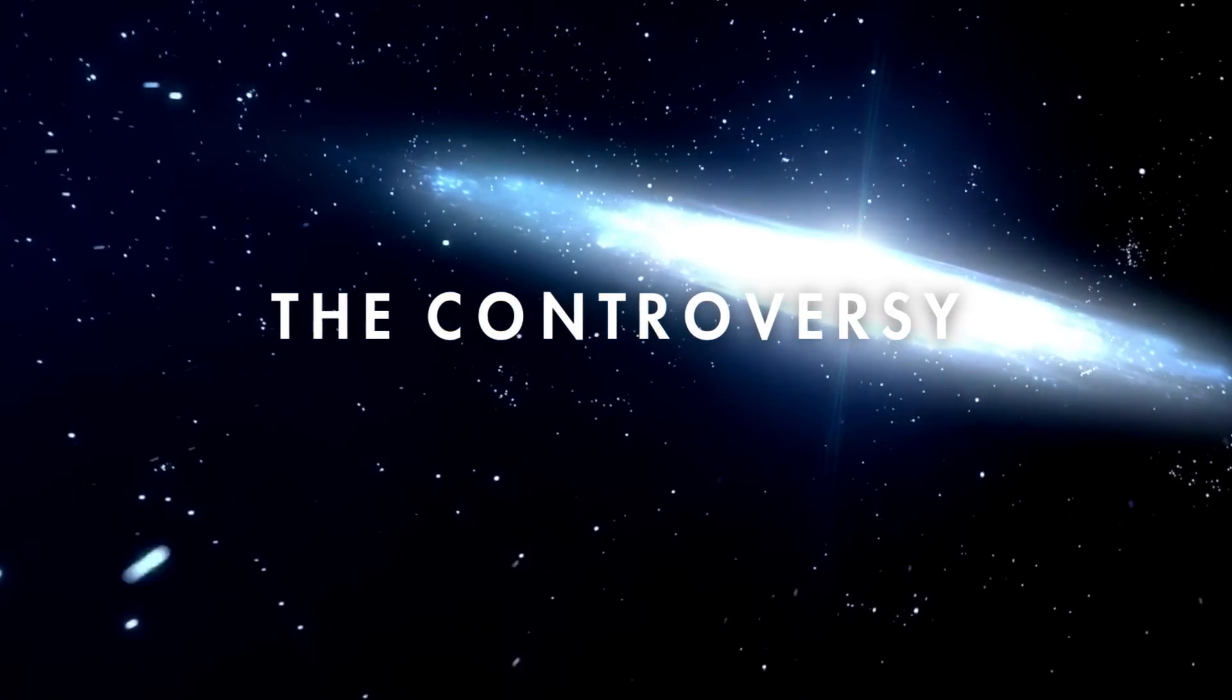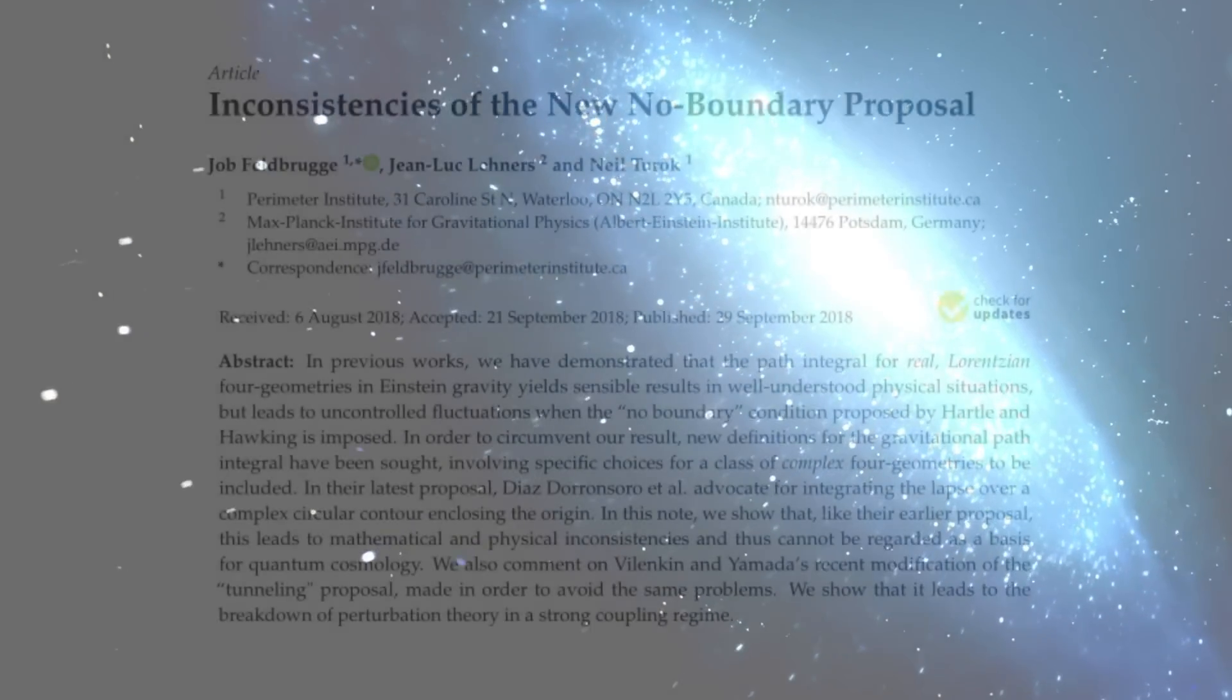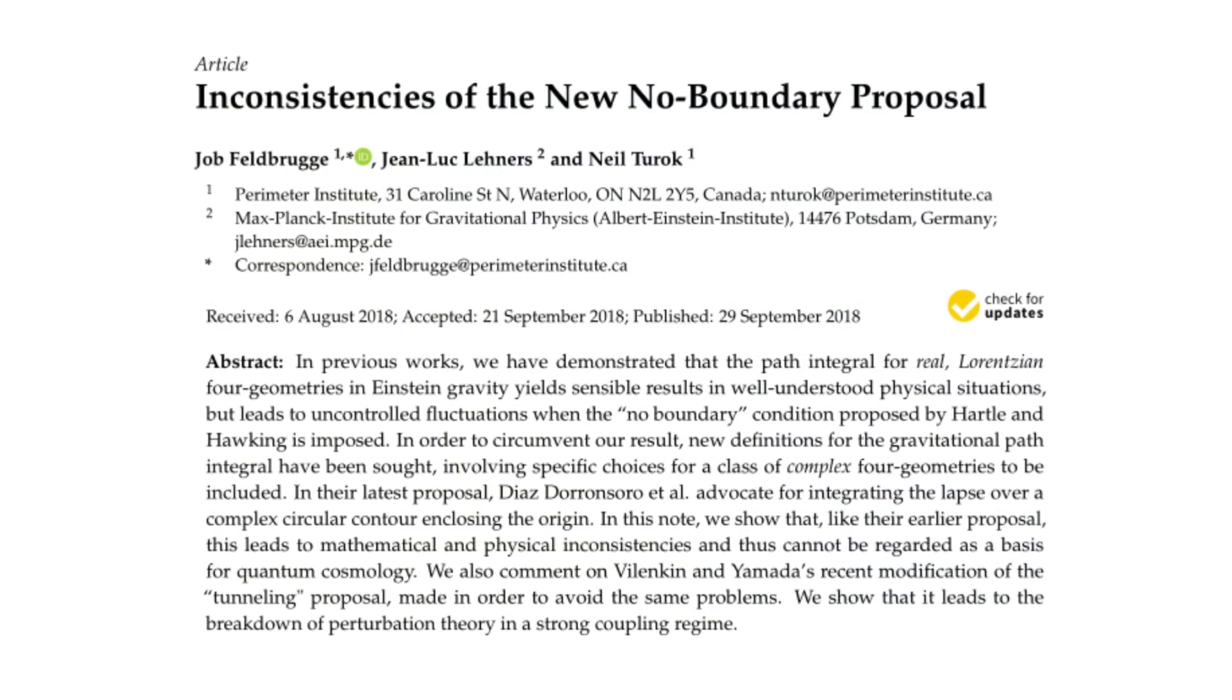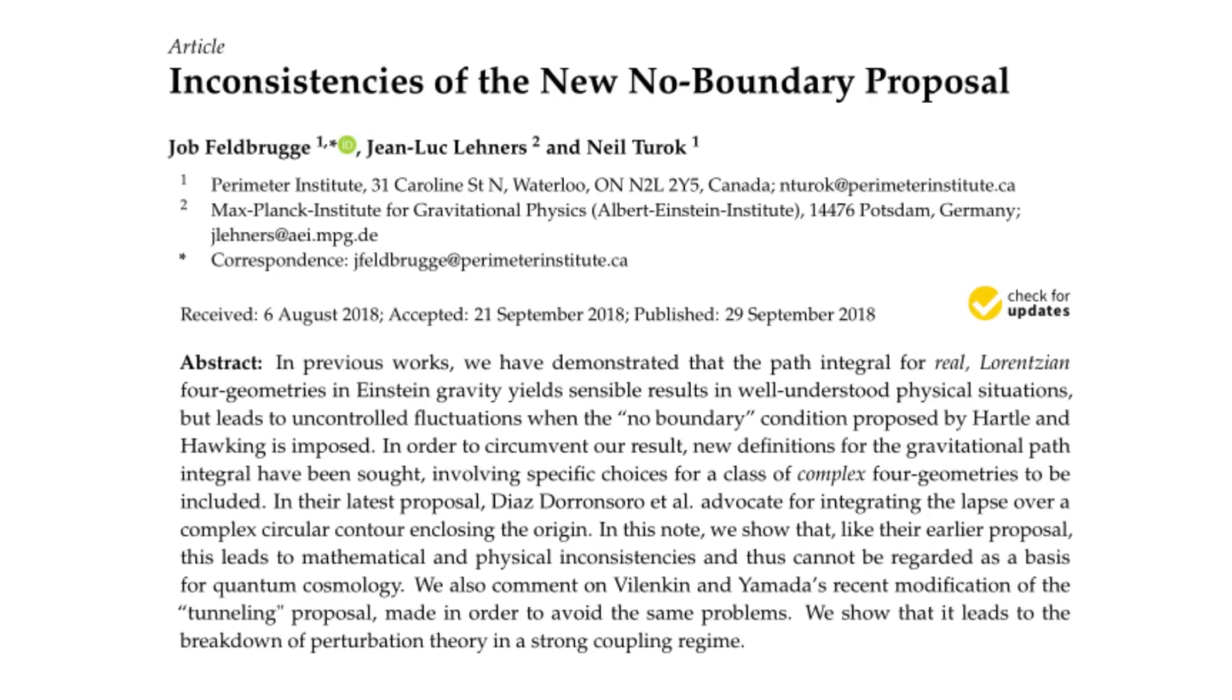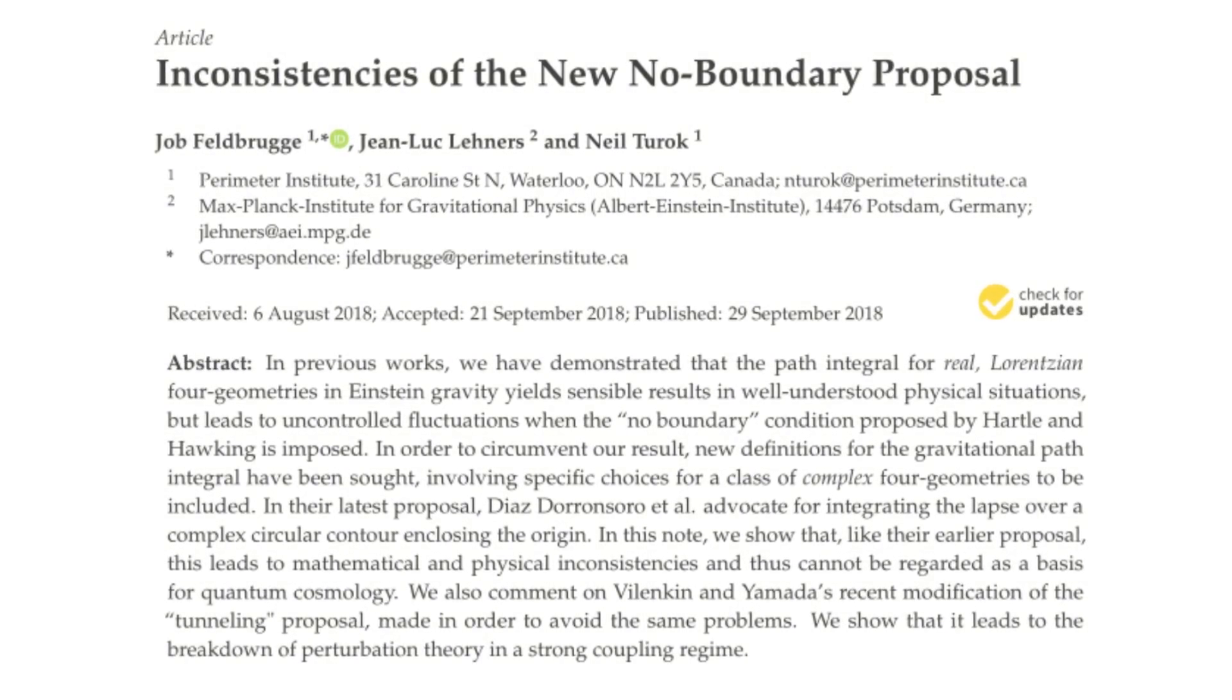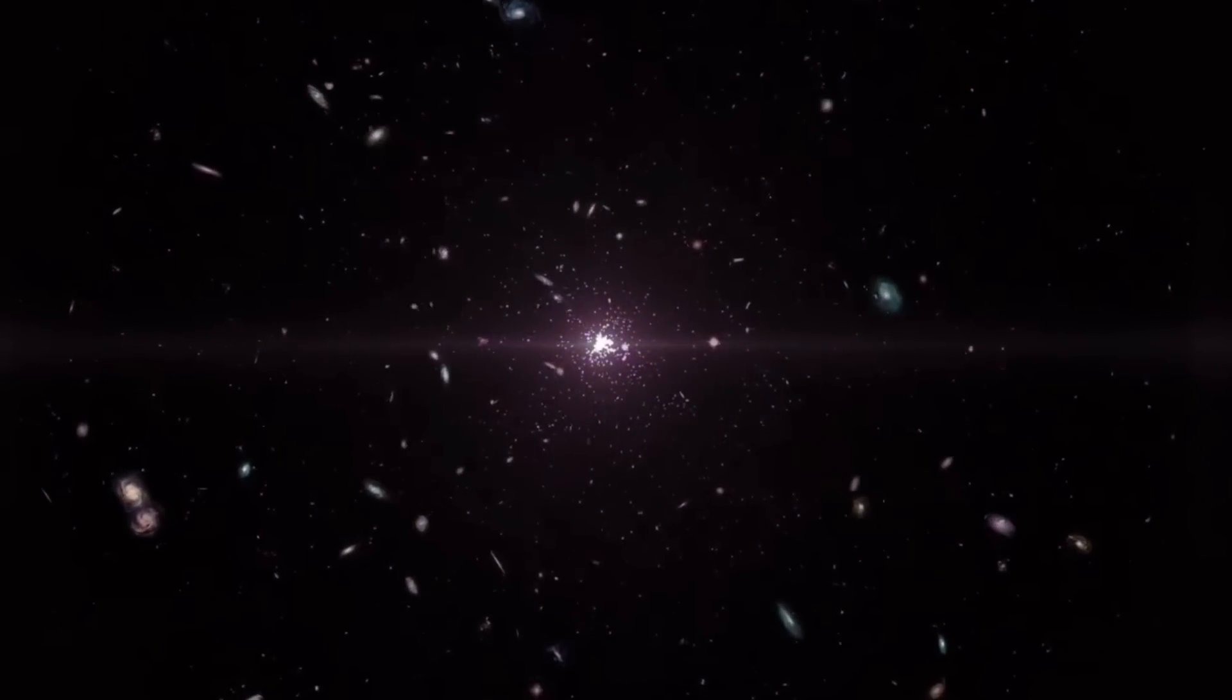As with any revolutionary idea, the No Boundary proposal didn't go unchallenged. In 2017, physicists Neil Turok, Joab Feldbrug, and Jean-Luc Lehners presented a counter-argument. They claimed that when new mathematical techniques were applied, the Hartle-Hawking model was untenable.